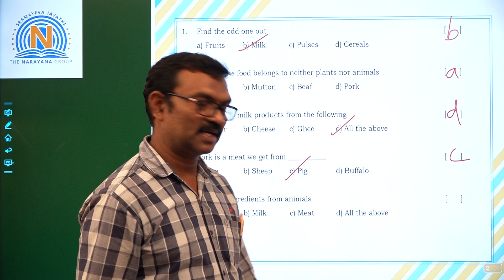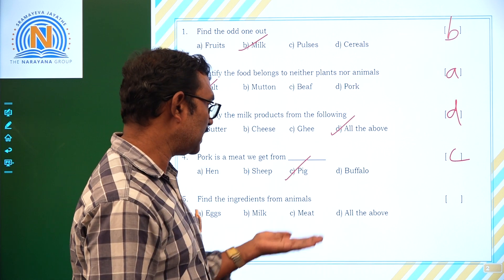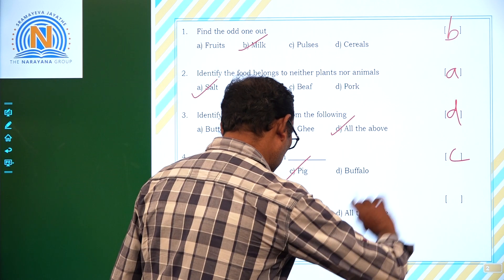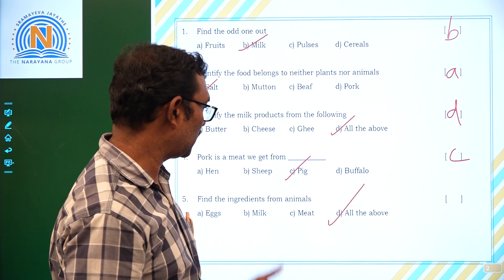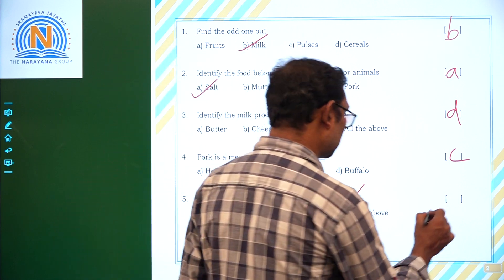Find the ingredients from animals. Yes, milk, meat, all the above. Yes, we get all of these. We get milk, meat from the animals. That means option D.